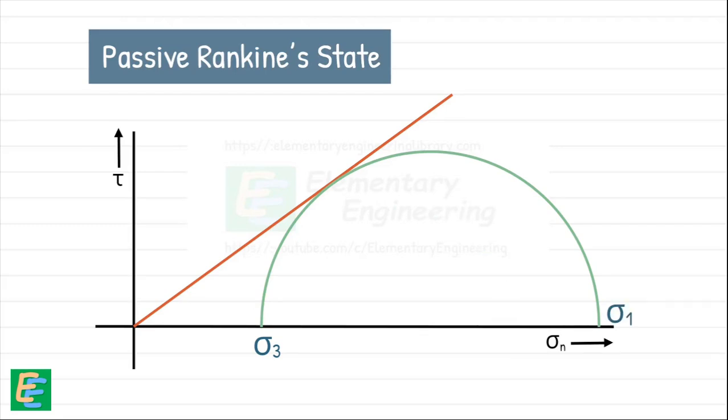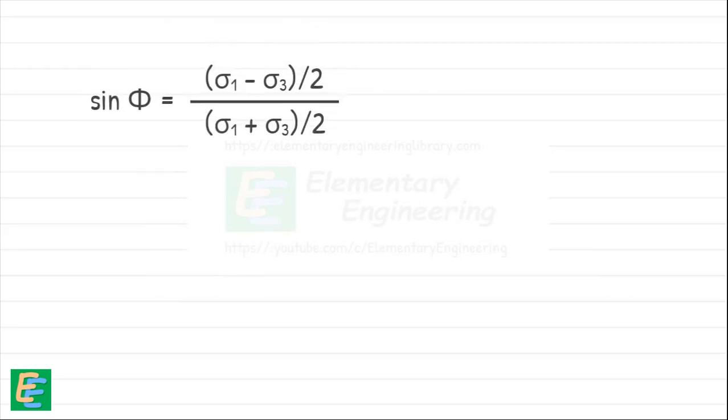Now, if we look at the triangle formed by the failure envelope, the stress axis and the radius of the Mohr circle, we can write sin phi as this. This time, solving for sigma 1, as this is the horizontal pressure. In this case, sigma 1 corresponds to the passive lateral earth pressure at failure, which we denote as PP.